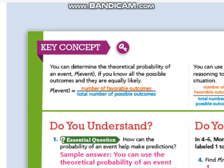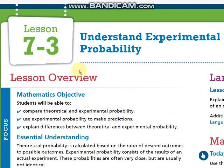Now, let's see what is the difference between this and the experimental. In the next lesson, which is 7-3, understand experimental probability — compare theoretical and experimental probability. How can we make predictions out of this topic?